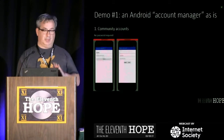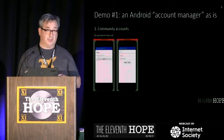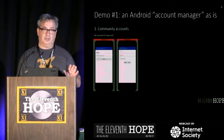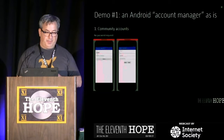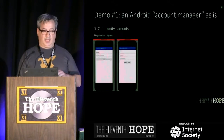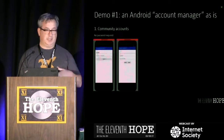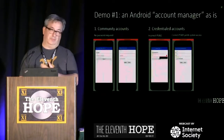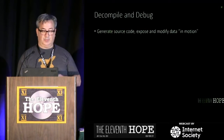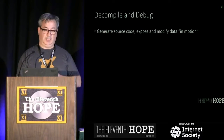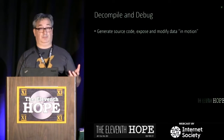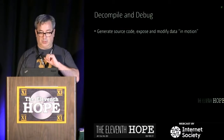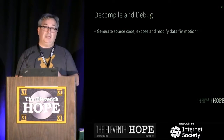For the demo: a simple Android application called Account Manager — managing accounts seems like it could be sensitive. It has two modes: you can log in with a Twitter account, where each session is independent, or you can log in with credentials, giving you access to all sorts of data that you can change and save. The demo has two parts: first, take a fully formed executable, generate the source code from it, attach a debugger, and show how you can look at the data, change the data, and change its behavior.